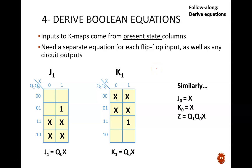Here are the simplest equations. J0 equals X, K0 equals X, and Z equals Q1, Q0, X. For this particular design, it so happens that J0 and K0 share the same equation. Also, J1 and K1 share the same equation. That's just a coincidence. Don't expect that in the future.